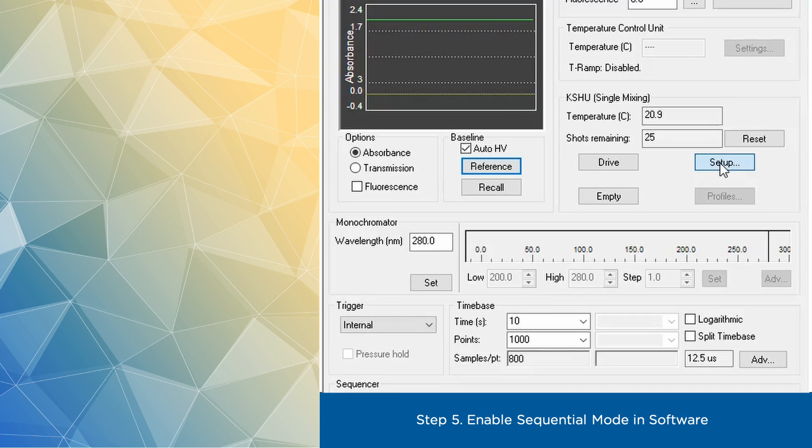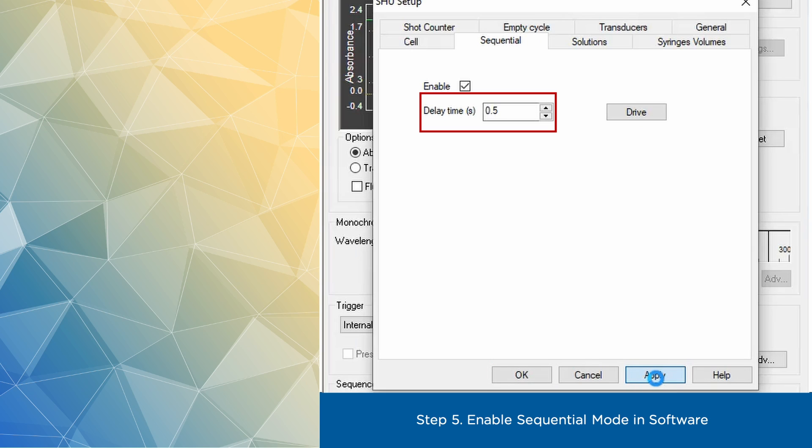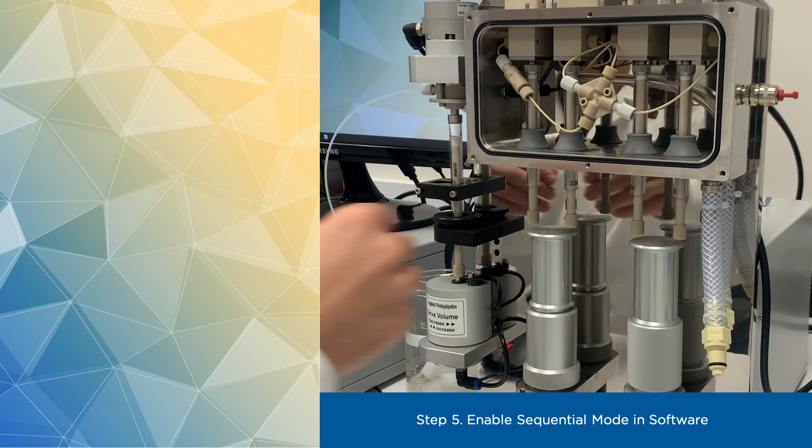Finally, go to ProData SX software, click on setup, switch to sequential tab and click enable checkbox. Here you can also adjust premix time delay, which we will have unchanged for this demo. The software may report this time in either seconds or milliseconds, depending on the version you're using, so be sure to know which one it is.